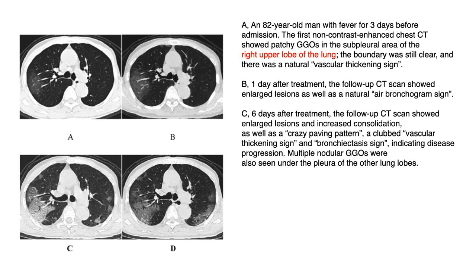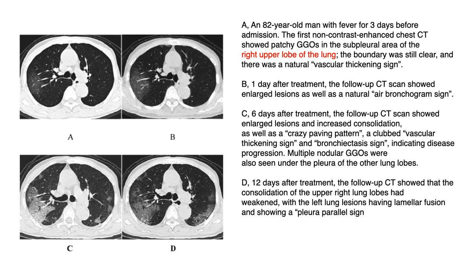Six days after, lesions increased — more like consolidation — and new ground glass opacities appeared on the left side. Crazy paving pattern was also visible. At day 12, follow-up CT showed opacification had reduced — resolving of the disease. The left side nodular lesions coalesced and formed a linear pattern showing lamellar fusion — the pleural parallel sign.